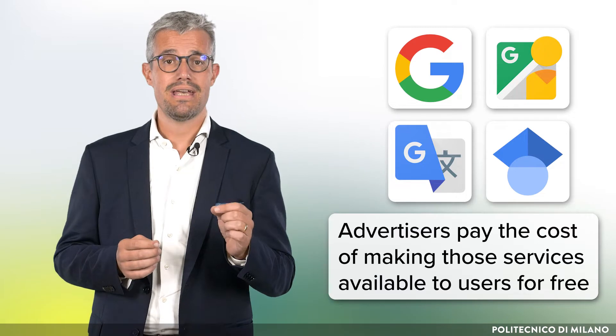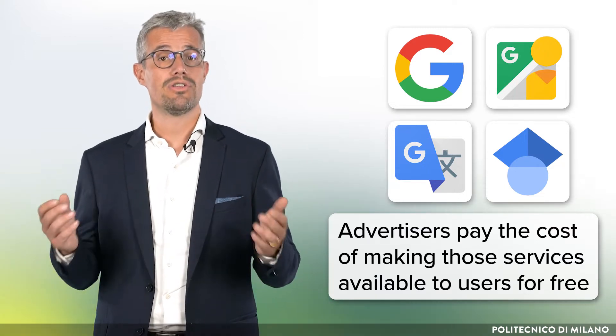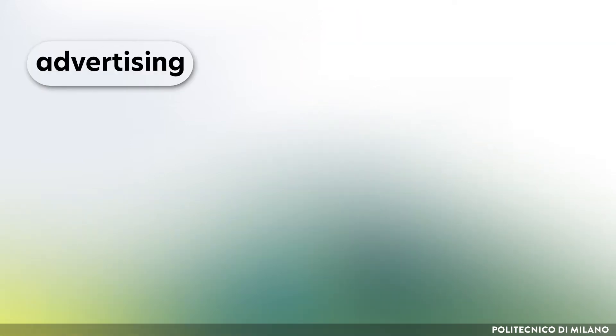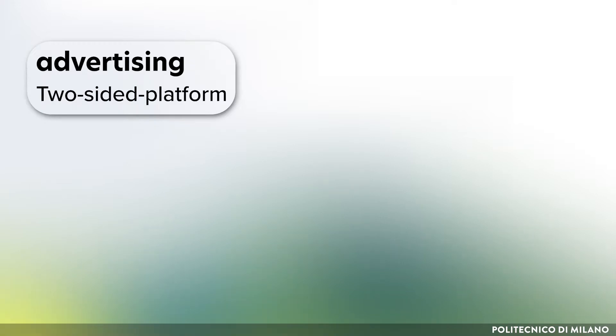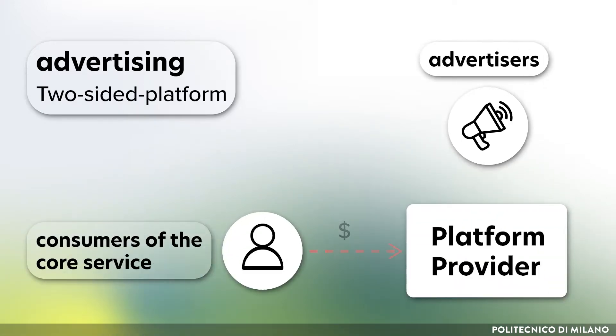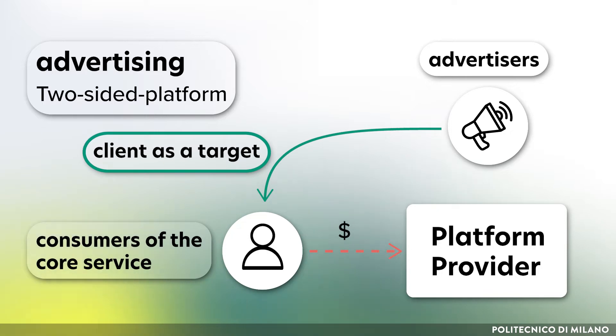Google and all its services — from the search engine to Street View, from Translator to Google Scholar — operate in the same way. Advertisers pay the cost of making those services available to users for free. These companies leverage an old business model dating from the beginnings of the modern newspaper industry: advertising. The advertising-based model is a specific type of two-sided platform approach, in which free or almost free services are delivered to a large number of consumers, who then become targets for advertisers who pay to access the eyeballs of those users.